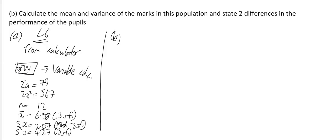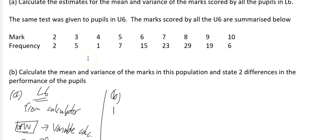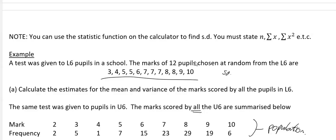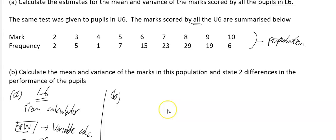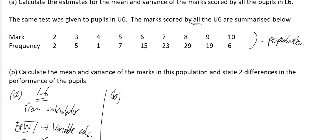Part B of this question is a bit different. It says the same test was given to pupils in upper sixth. The marks scored by all the upper sixth pupils are summarized. This is all of the upper sixth pupils, so instead of being a sample, this is a population. That is key that we understand why that's different. In part A, this small group was just a sample and you were using it to estimate the whole population. Whereas in part B, this is a population.